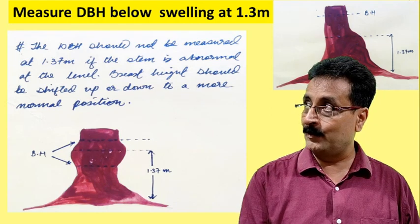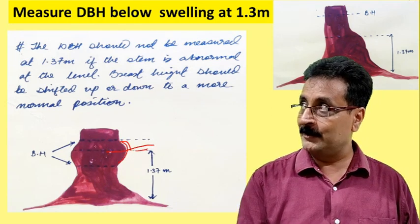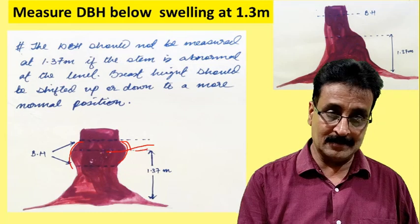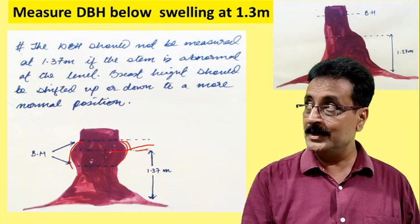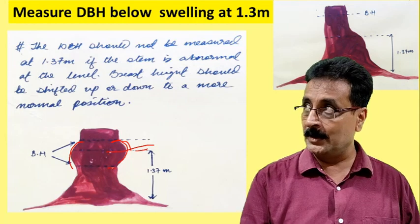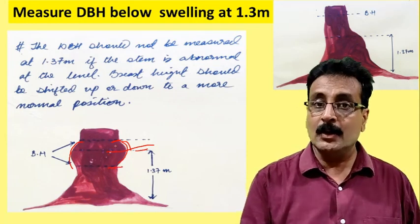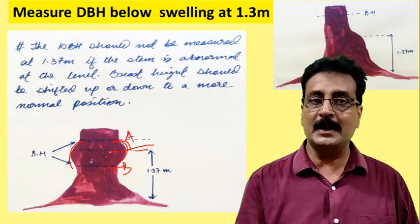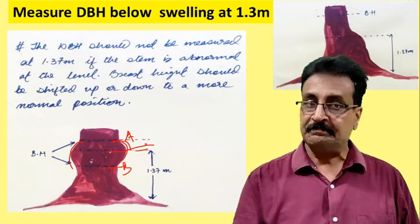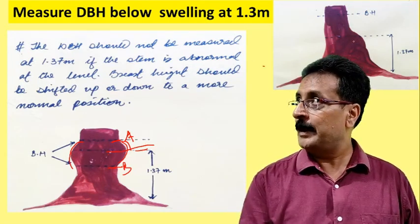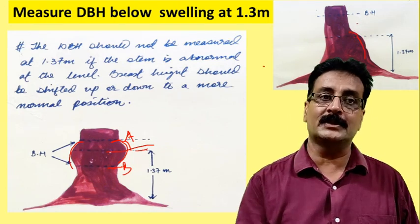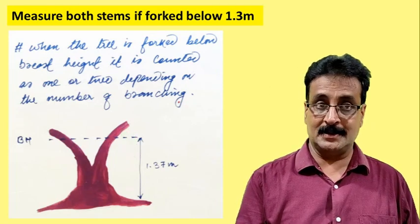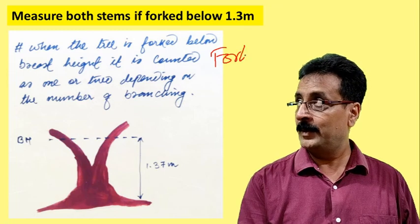Rule number three: if the tree is bulging at exactly 1.37 meters, the diameter reading will be inflated, giving you an error. In this case, take one measurement above the bulge and one below it, then calculate the average of A and B. If necessary, you can also go above 1.37 meters to avoid the bulge.